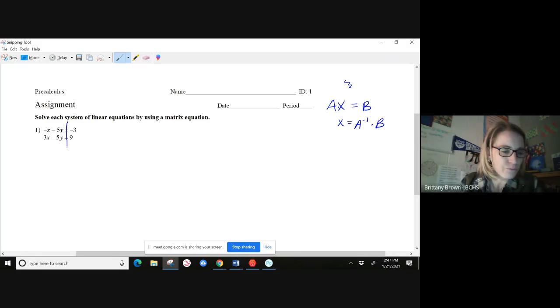What you're going to do is create a matrix using the coefficients in your equations on the left-hand side of the equal sign. So if we were to literally just drop these x's and y's, what coefficients would we have? We would have a negative 1 on the first row and a negative 5 for y. Then we would have a positive 3 for x on the bottom row and a negative 5 again for this y coefficient. So it's just pretty much dropping the x's and y's using the coefficients.